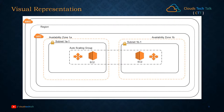AWS always creates multiple availability zones within a particular region. You can select your availability zone, and it is up to you whether you create an EC2 instance in a single or multiple availability zones. Every availability zone has its own subnet — a subnet cannot extend beyond an availability zone. Within that subnet you create your EC2 instance. For high availability, you can create an auto scaling group of multiple EC2 instances across availability zones, which can scale up and down based on demand.